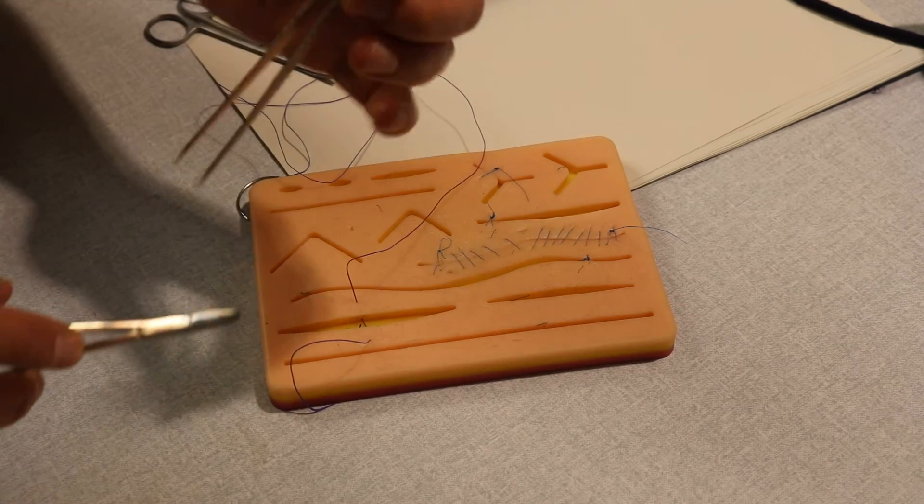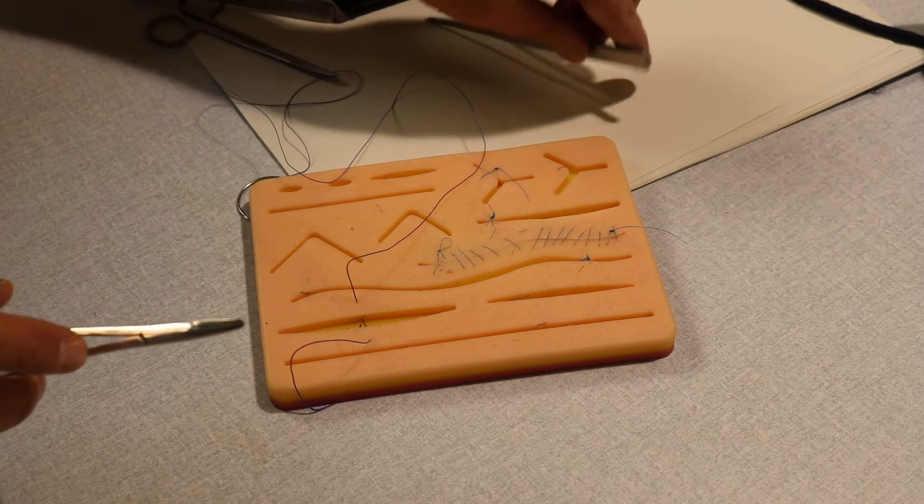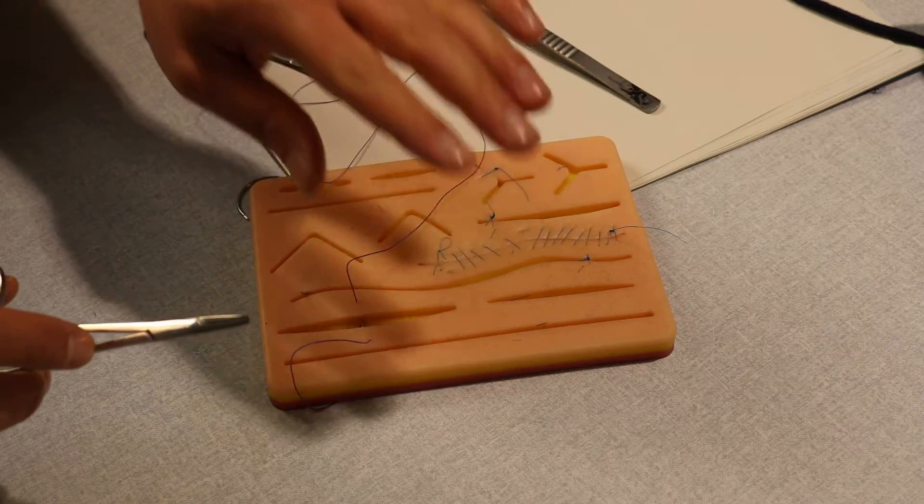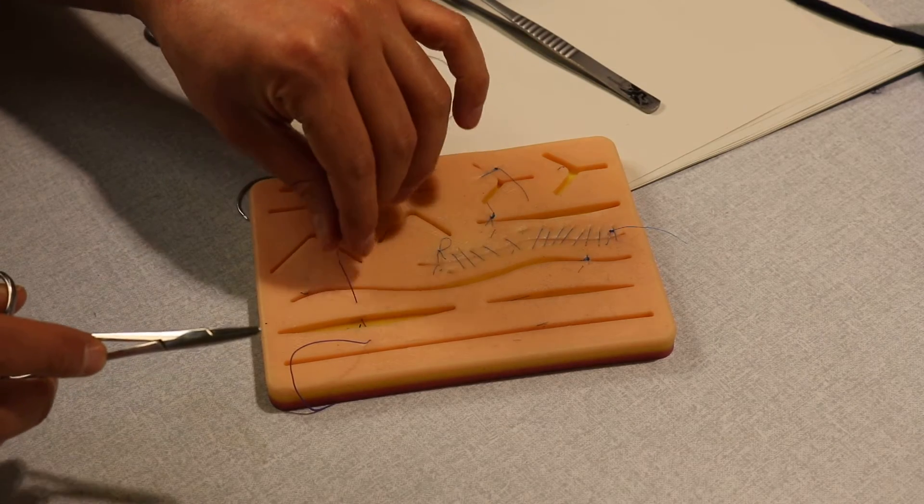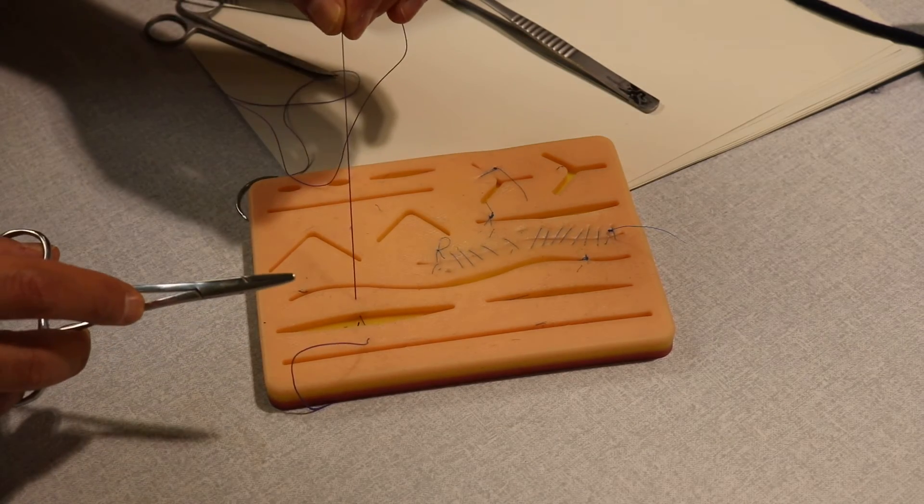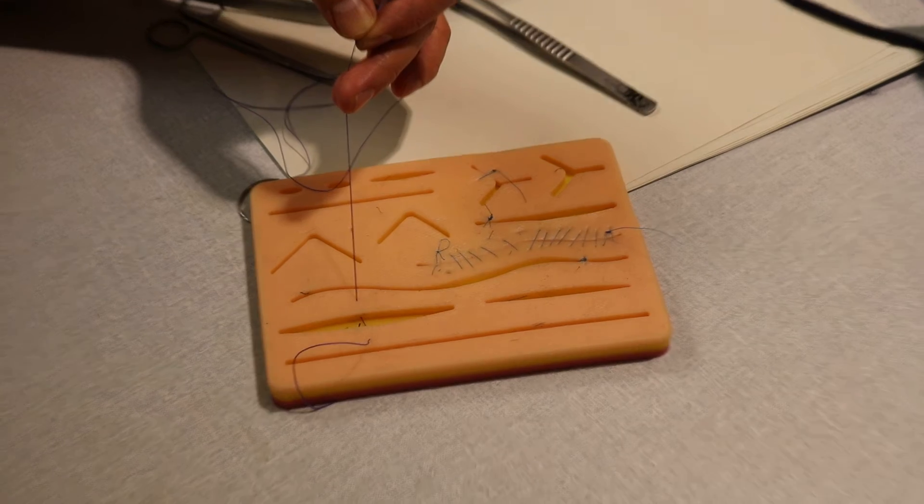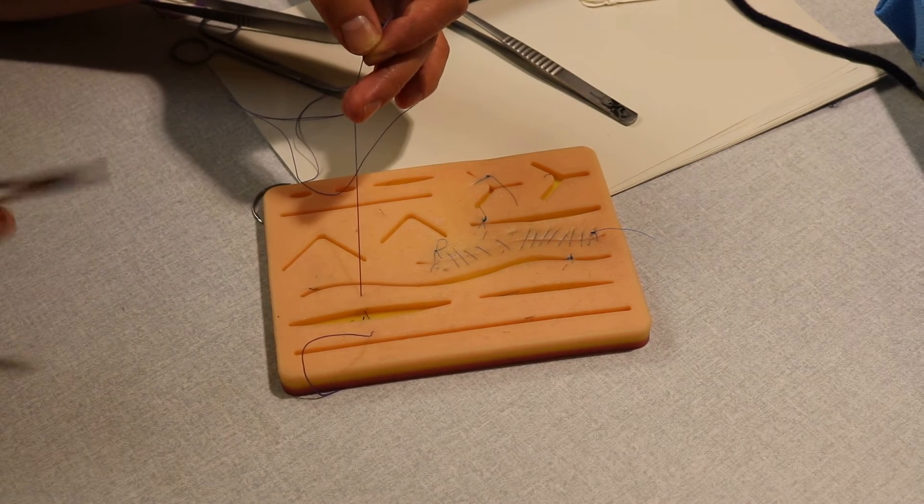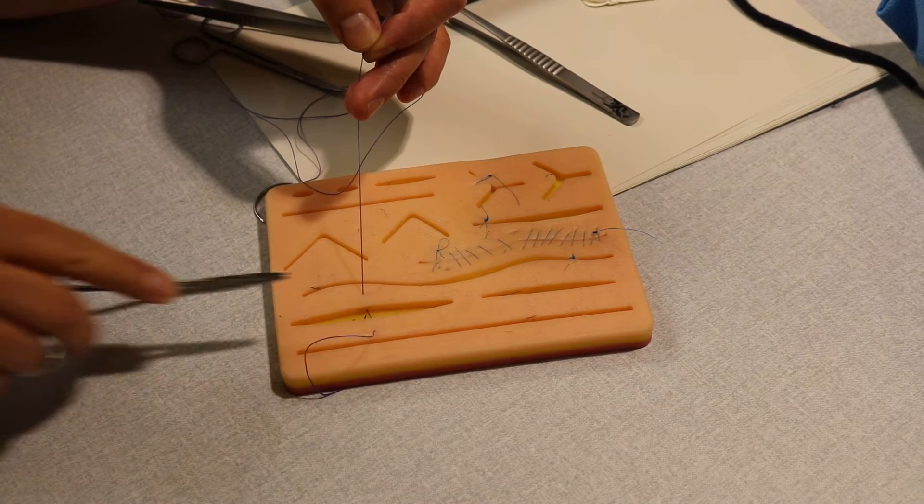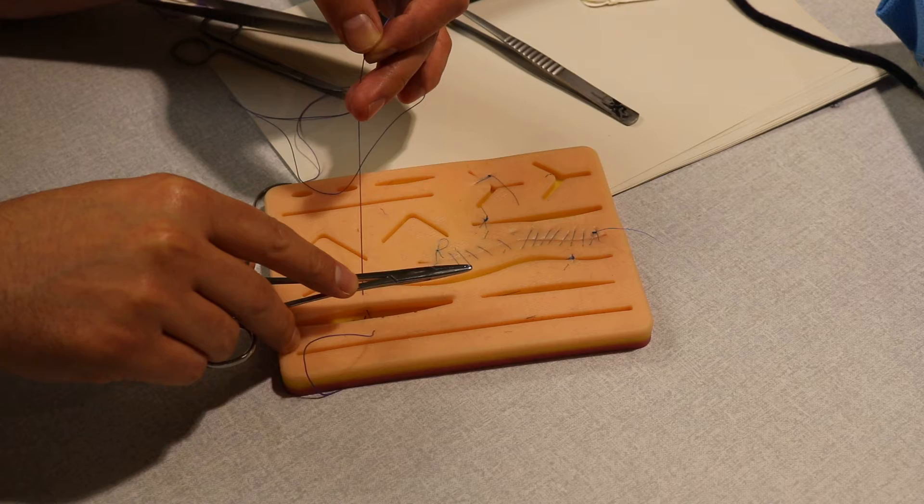You can get rid of the forceps, put it away, and hold the long thread. I'm now holding the long thread. Bring the needle holder parallel to the wound, exactly like this.